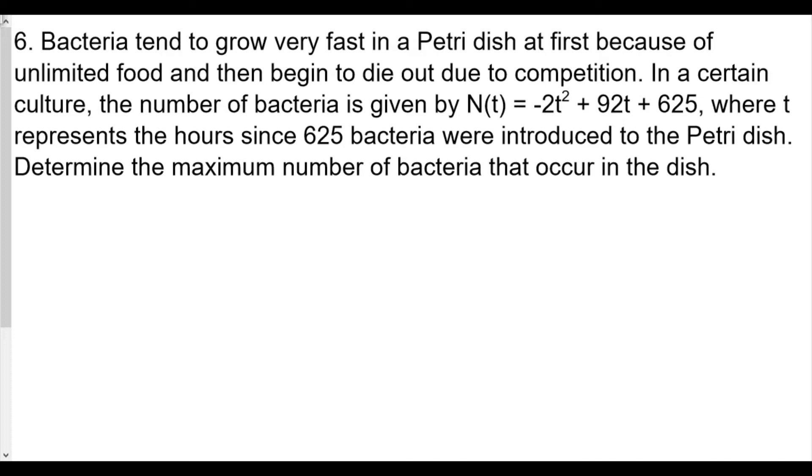Bacteria tends to grow very fast in a Petri dish at first because of unlimited food and then begin to die out due to competition. In a certain culture, the number of bacteria is given by N(t) equals negative 2t squared plus 92t plus 625, where t represents the hours since 625 bacteria were introduced to the Petri dish.